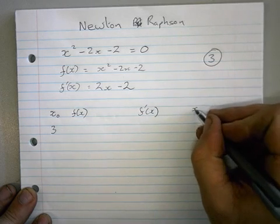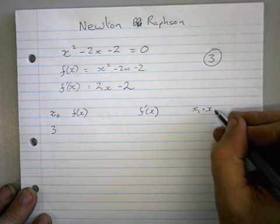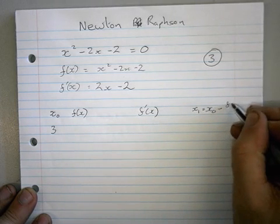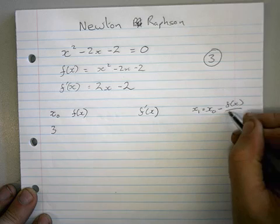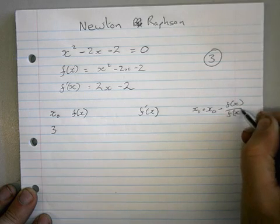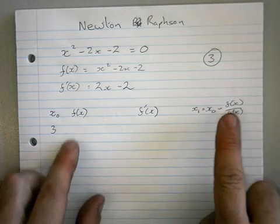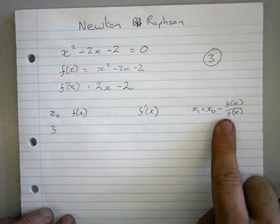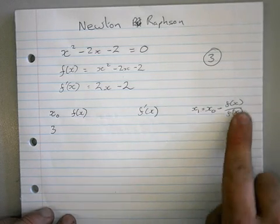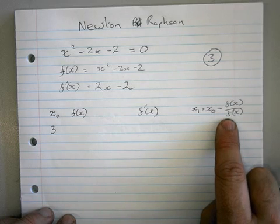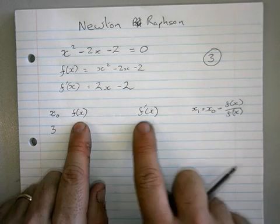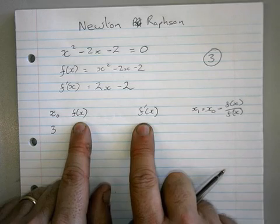Then we're going to write down f'(x). And then we're going to write down x1 equals x0 minus f(x) over f'(x). Now this formula here you're given, so you don't have to remember this formula. It'll be written down for you. But they won't give you this bit and this bit. You'll have to know that bit.